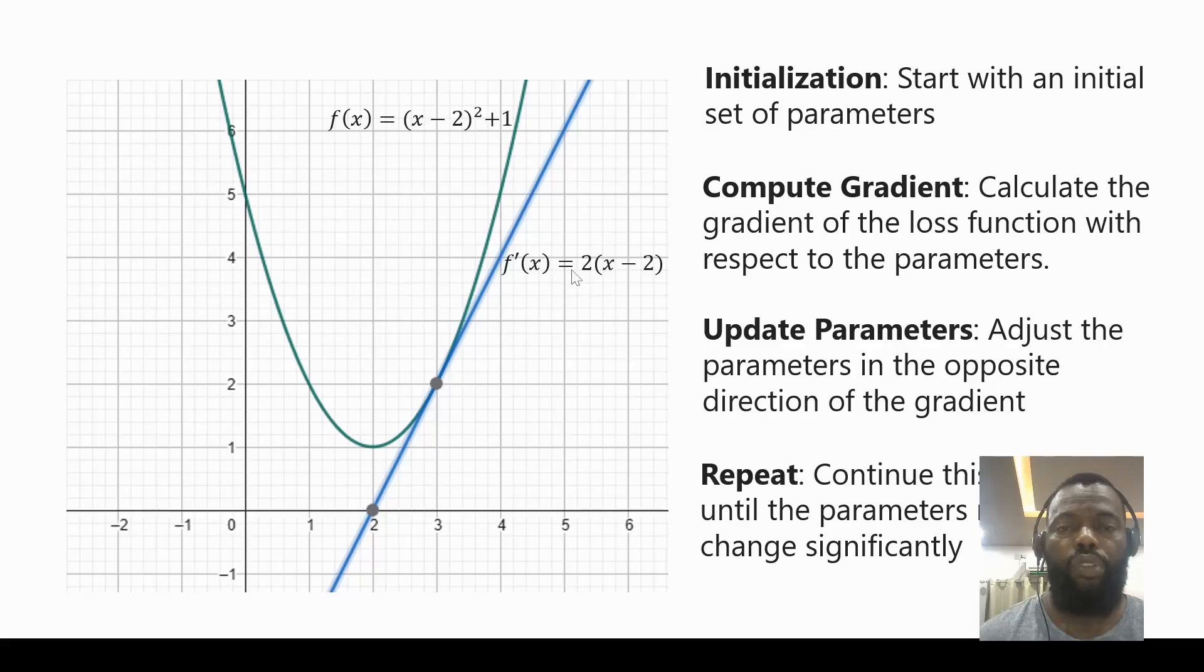The gradient function is the first derivative of the function that we are trying to minimize. And here we have the line that comes from this gradient function.